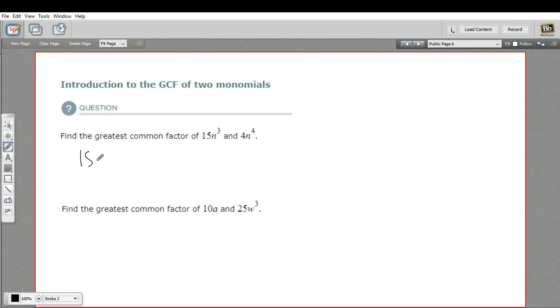So if we took 15n cubed, let's do the number part first. What are the factors of 15? Well, 1 times 15 and 3 times 5, and I think that's it. So that didn't take too long. Those are all the factors of 15.